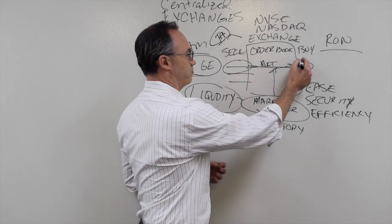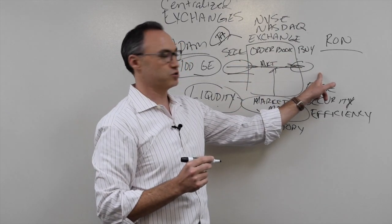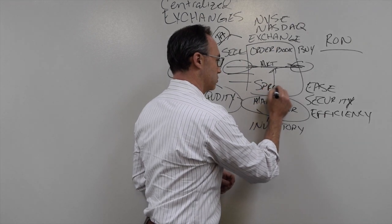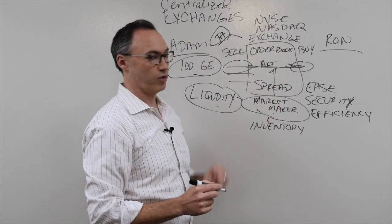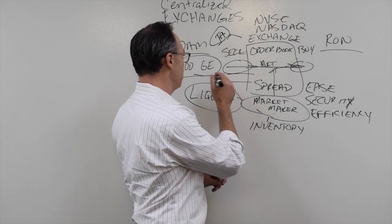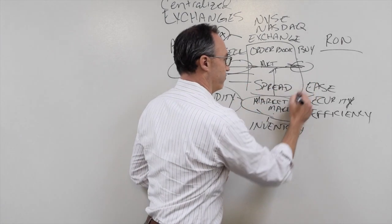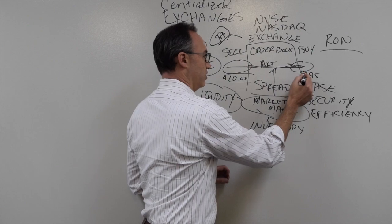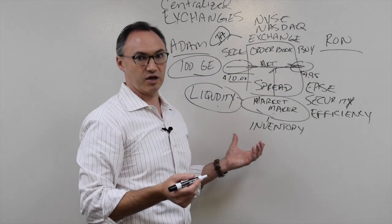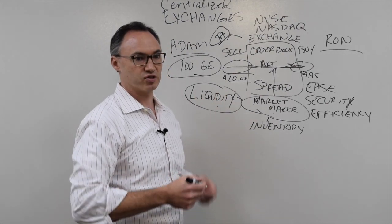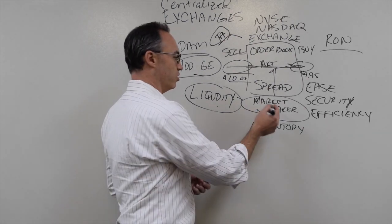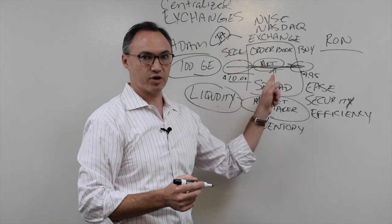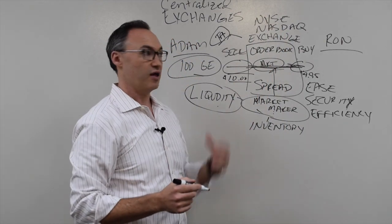Where does the exchange make money? There's a difference in price — a spread — between the buy and the sell. The buyers are trying to get it at the lowest possible price and the sellers are trying to sell at the highest possible price. The spread is usually where the exchange and the market maker make all their money. If the market maker buys GE stock for $9.95 and sells it for $10, they make $0.05 on every share. With millions and millions of shares traded every day, millions times $0.05 is a really big deal. The market maker makes their money on the spread. That is a centralized exchange.